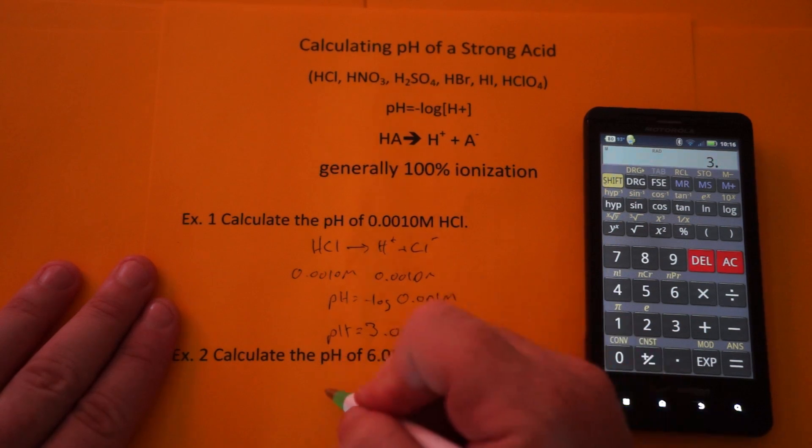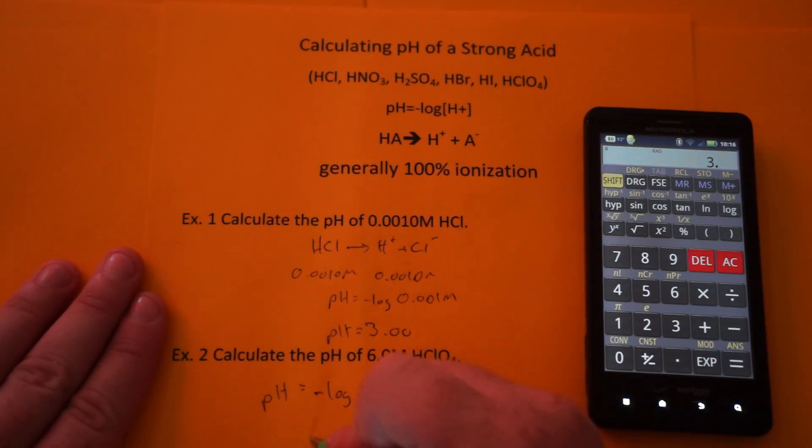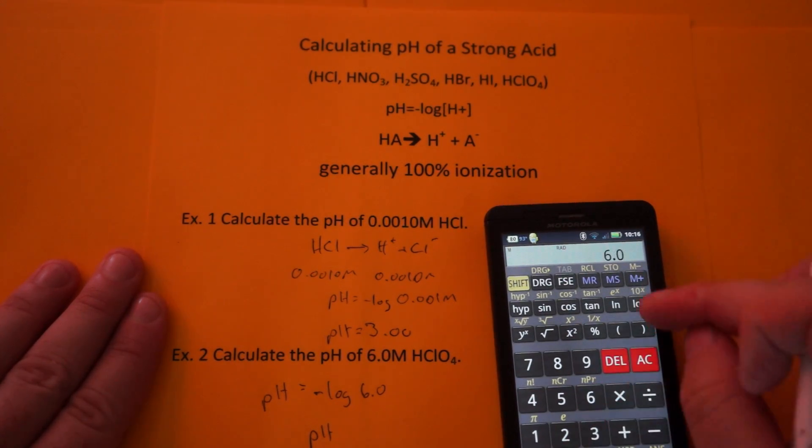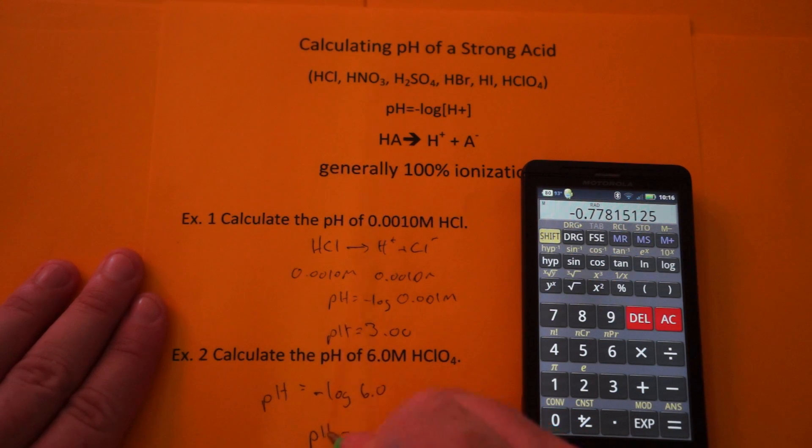For the next example, we're going to take the negative log of 6.0, and that's going to be our pH for perchloric acid. So 6.0, log, and make it negative, and you get a negative pH of -0.78.